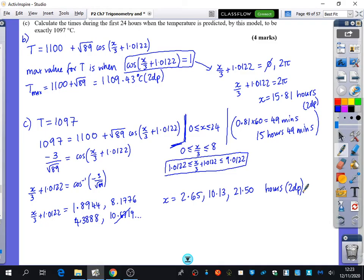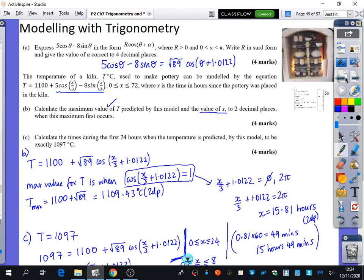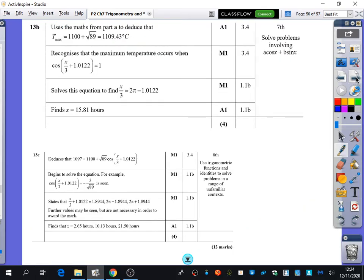Sam, were those the answers that you got? OK, good. I was just checking. The question doesn't say the first 24 hours? These are the first 24 hours. These are within the first 24 hours. And if I did it with this one here, it would have been outside the first 24 hours that we had. I'm going to just check what the mark scheme says to see that we got these right. We got 15.81 hours, and then the times are 2.65, 10.13, and 21.50 hours that we have there for those times as well.